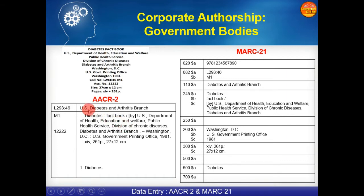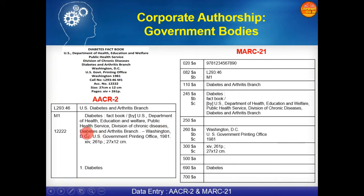Let's see how we prepare the card catalog as per AACR2. The main entry will be prepared under the title and written as US Diabetes and Arthritis Branch. The access point is prepared under the name US Diabetes and Arthritis Branch. Then: 'Diabetes: fact book / statement of responsibility' — since 'by' is not given, it is accommodated in square brackets — then US, Department of Health, Education and Welfare, Public Health Service, Division of Chronic Disease, Diabetes and Arthritis Branch. Hyphen — Washington, DC: US Government Printing Office, year of publication, then physical description.